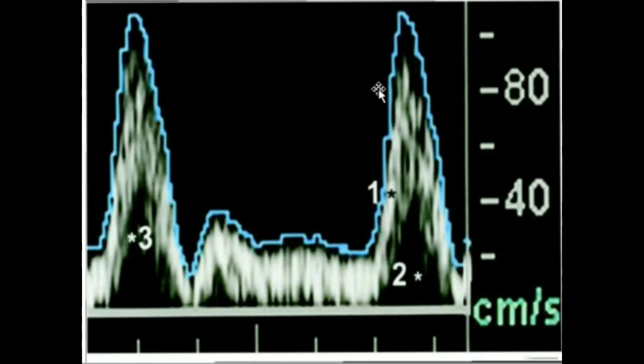This is a magnified view. Imagine that the spectral display is made of tiny squares called pixels. We cannot see the pixels in this image. The pixels are corresponding to a specific moment in time and a specific frequency shift or velocity. The brightness of a pixel is proportionate to the number of blood cells causing that frequency shift at that specific point in time.